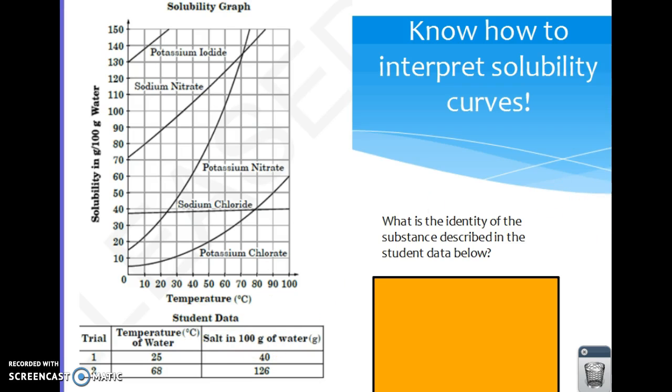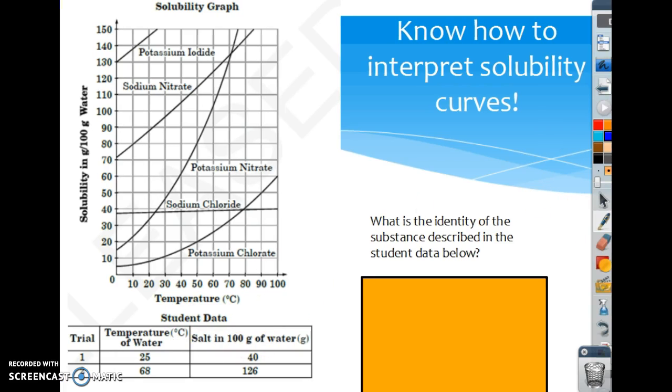So I would use either my finger or a highlighting tool to do that. So at, let's do 25 degrees first, that would be somewhere right around here. I'm just going to draw a line up. And then the solubility is 40. So let's go to a horizontal line. That would meet right there.